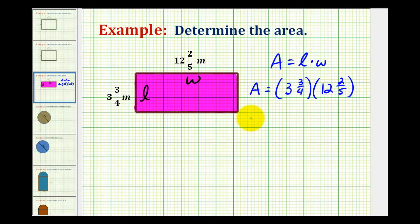In order to determine the product of two mixed numbers, we have to rewrite them as improper fractions. So for three and three-fourths, we'll have four times three plus three, that's going to be fifteen-fourths. And then for twelve and two-fifths, we'll have five times twelve, that's sixty, plus two, sixty-two-fifths.